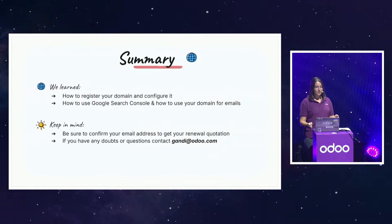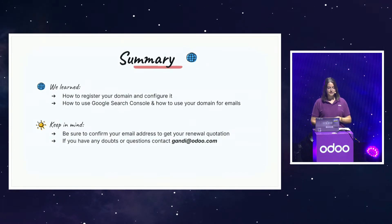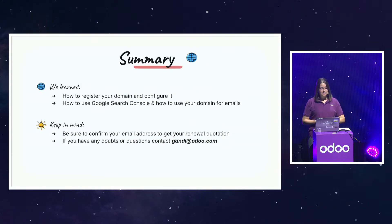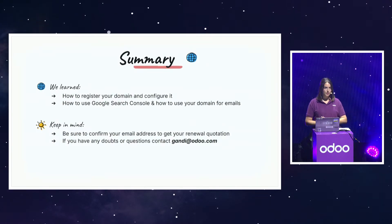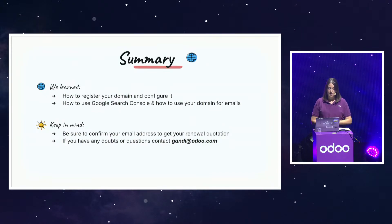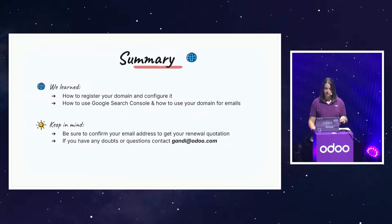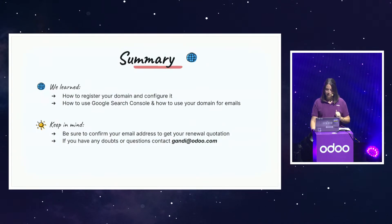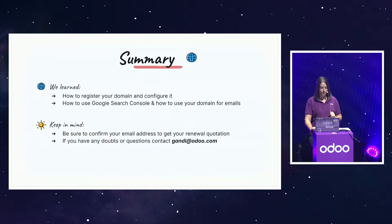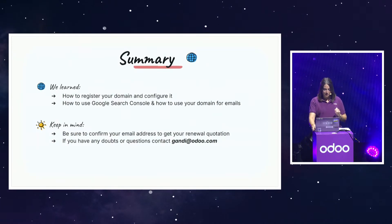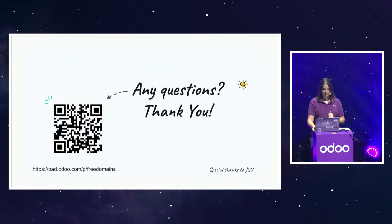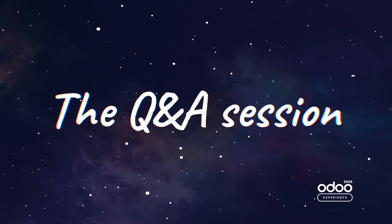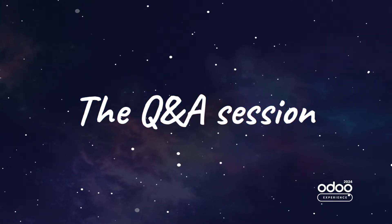Here is a little recap. Today we learned how to register your domain and configure it, how to use Google Search Console, and how to use your domain for your emails. Keep in mind that confirming your email address is really important to receive important information and your renewal quotation. And of course, if you have any doubts or questions, contact gandi.auto.com. Thank you all for listening today. Remember, getting your website visible online has never been easier and quicker with Odoo's free domain offer. Take advantage of this to boost your online presence today.